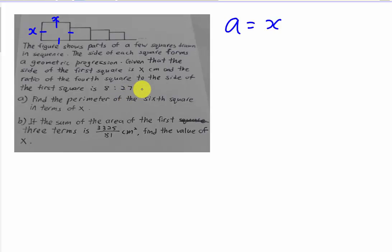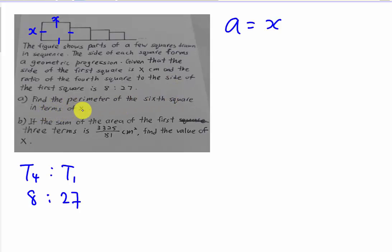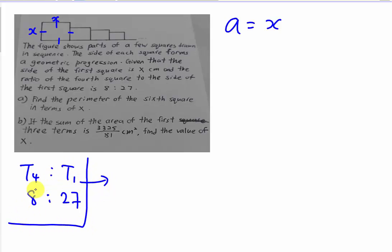You have to understand about ratio. So I'm going to call this: t4 over t1 will equal to 8 over 27, because for ratio we always can write like this — the term 4 is 8 and term 1 is 27. So t4 ratio t1 means t4 over t1, and 8 ratio 27 will equal to 8 over 27.